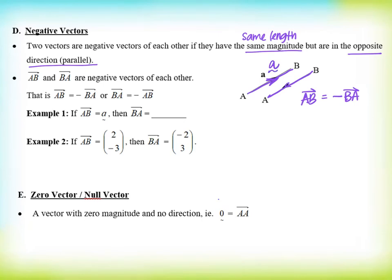Remember we have vectors in the column vector form. So if A to B is given to be 2 units on the x-axis and negative 3 units on the y-axis, then what will BA be? It will come in the opposite direction. That means from 2 it will change to negative 2, and from negative 3 it will change to positive 3. So this is BA.